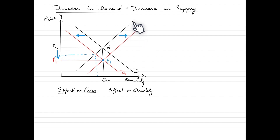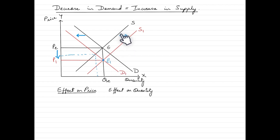When supply increases, we see the supply curve shifting to the right from S to S1, establishing a new equilibrium. An increase in supply exerts a downward pressure on prices because there is more available in the market and producers may compete to lower prices to sell excess stock. The quantity would go up, as consumers are able to buy more at the existing price level.